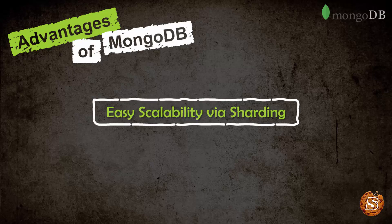MongoDB is easily scalable. It enables horizontal scalability by using a technique called Sharding. Sharding distributes the data across physical partitions to overcome hardware limitations, and the data is automatically balanced in the clusters.